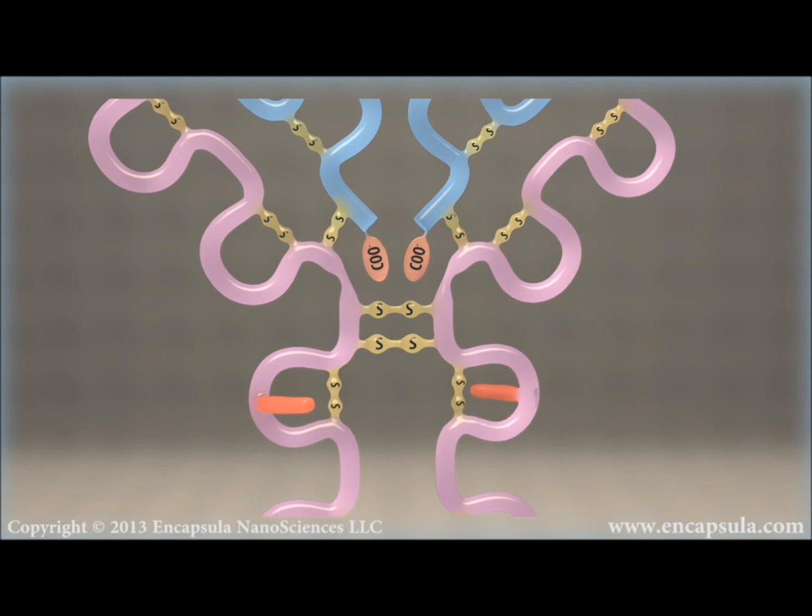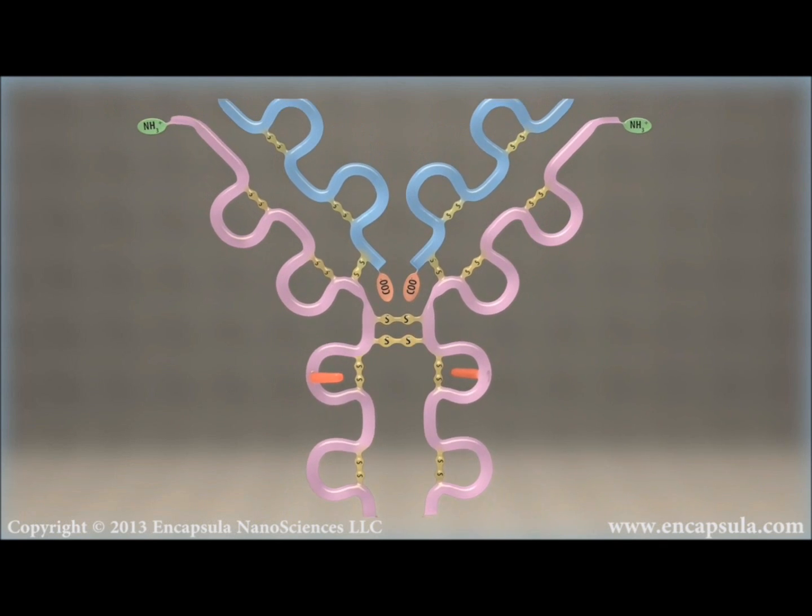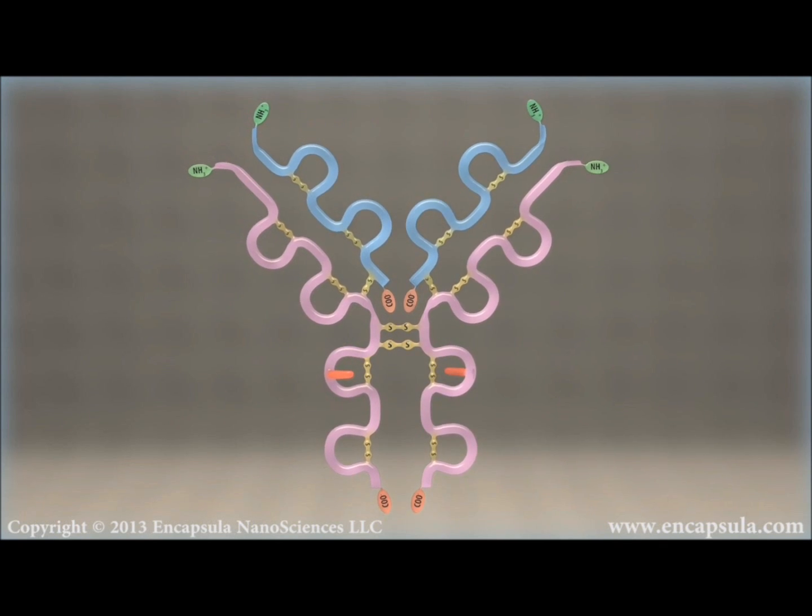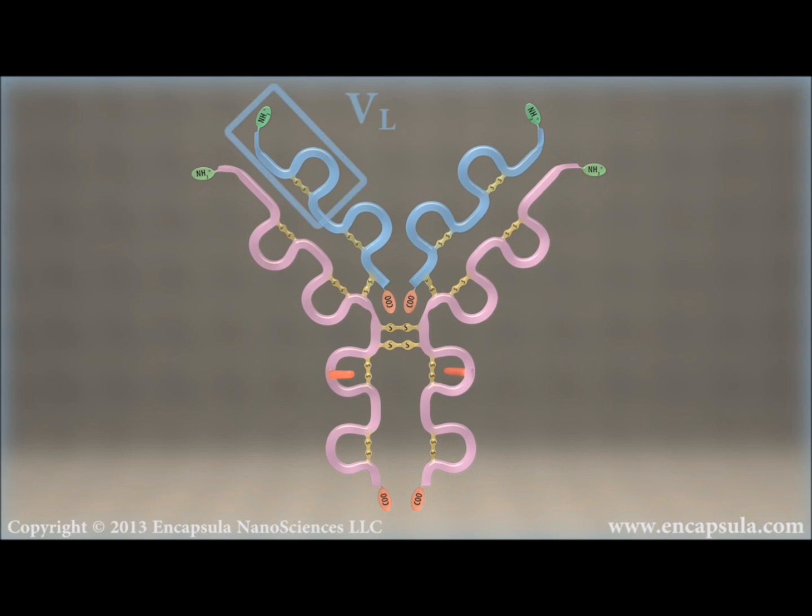The light chain is separated into two domains, the VL and the CL. The heavy chain of immunoglobulin G has several domains: one VH and four CH regions. The heavy V unit shows similarity to the V domain of the light chain, while the C units show homogeneity to each other and to the C unit of the light chain.